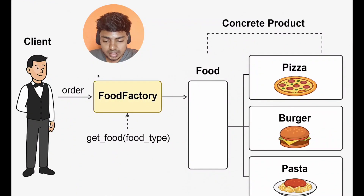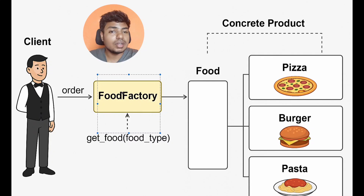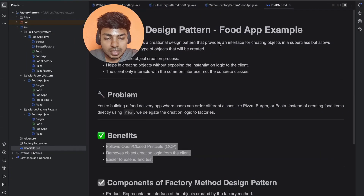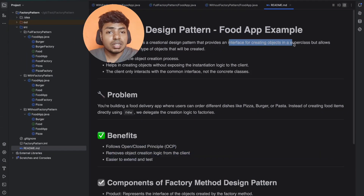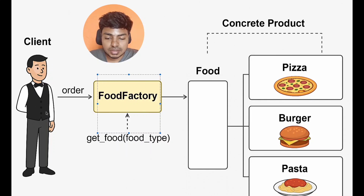We have a diagram showing the waiter. The waiter is going to be the factory. So we solve this problem: the customer no longer goes directly to the pizza or burger. The waiter — the food factory — takes care of it. That is what our definition says: it provides an interface for creating an object. If we have any concrete implementation, we put it on our side. The food factory is going to be an abstraction — an interface or abstract class. The customer just passes the input and gets the benefit from the restaurant.